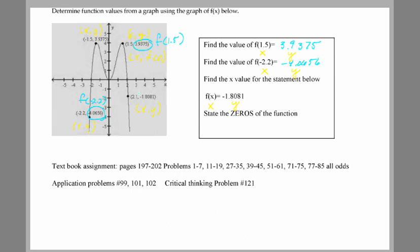If that's the y value, what's the corresponding x? Simple enough, x is 2.1. Finally, last thing. Let's find the zeros of this function. And remember, a zero is another name for what? X intercept.